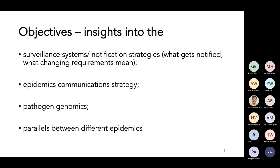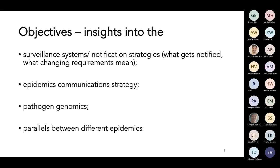So the objectives. I think it's going to be really an overview, rather than getting into too much detail on the pathology itself. But I think it will be interesting to see how this particular epidemic evolved. I would ask you to establish parallels with other epidemic or pandemic situations we've been living through — the COVID-19 pandemic and the outbreaks of monkeypox infection. We'll cover surveillance systems, notification strategies, epidemics, communication strategy, and pathogenomics.